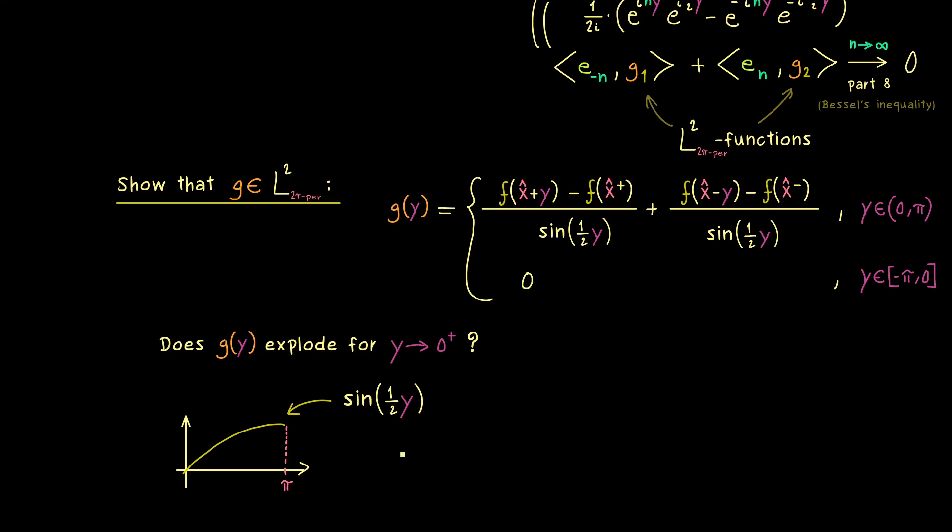Hence we have to consider the sine function of 1/2 y when we approach 0. However this one we can quickly estimate by a linear function because the derivative of the sine function at 0 is strictly positive. Therefore we just have to choose a smaller slope and that's all we need. For example 1/4 times y is definitely smaller than this sine function. And with that we can just estimate each part in the function g separately. So for example the first part here we can estimate in the absolute value when we just put 1/4 times y in the denominator. Which simply means we can pull out a factor of 4.